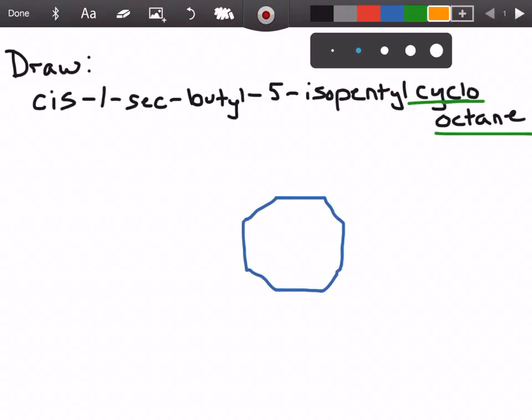If we go ahead and number our carbons, just start any one to label as one, two, three, four, five, six, seven, eight. Awesome. Now we have cyclooctane and we're oriented. So let's move on to the next part.